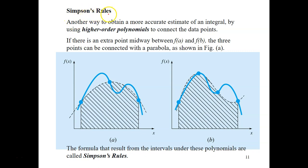Our next method is called Simpson's Rule, which is an improvement of the trapezoidal rule. In this method, we introduce another point between the limits a and b, and use a higher order polynomial to connect all three points. The blue line is your function, and we use a parabola to connect points a, b, and the middle point. This gives a better approximation of the integral, so the error will be less compared to the trapezoidal rule.